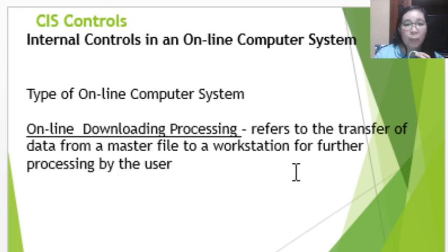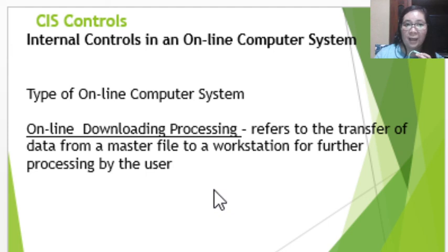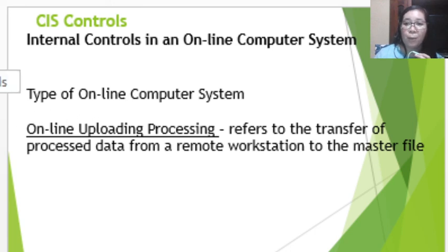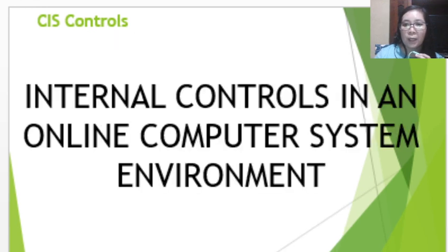Online downloading processing refers to the transfer of processed data from a master file to a workstation for further processing by the user. Online uploading processing refers to the transfer of processed data from a remote workstation to the master file — the opposite of downloading processing. Those are the internal controls in an online computer system.